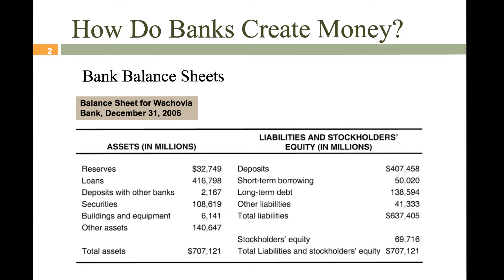So this bank may be required to keep 10%, and if that's the case, this bank is falling a little short. If the required reserve ratio set by the Federal Reserve is 10% — and I just made that up — then that would be 10% of $407,000, which is $40,000. So that would be saying: you need to have $40,000 in reserves. If that was the scenario, this bank is falling short and would need to take steps to fix it.